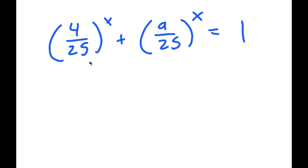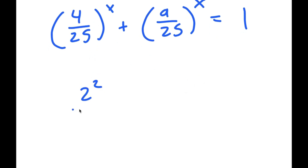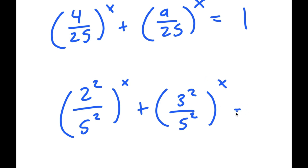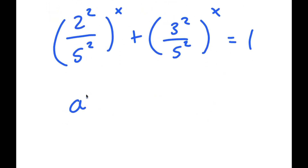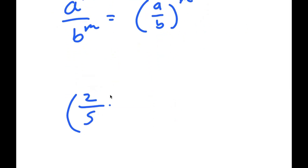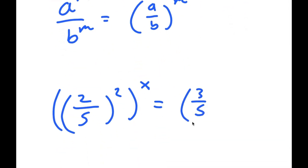From here I can rewrite 4 over 25 as 2 squared over 5 squared, and I can rewrite 9 over 25 as 3 squared over 5 squared. Now applying the same rule — a to the power of m over b to the power of m equals a over b to the power of m — 2 squared over 5 squared turns into 2 over 5 squared, and 3 squared over 5 squared turns into 3 over 5 squared.